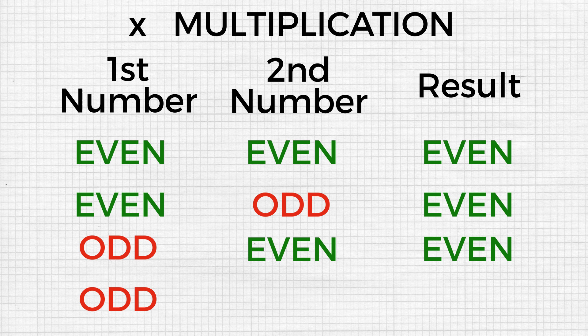If the first number is odd and the second number is odd, the result will also be odd.